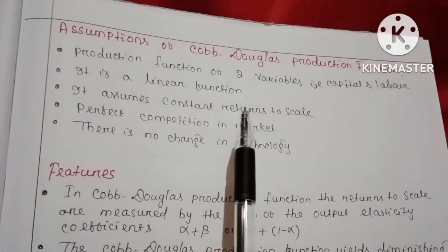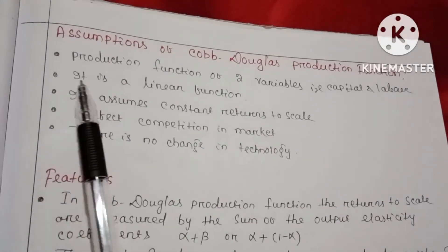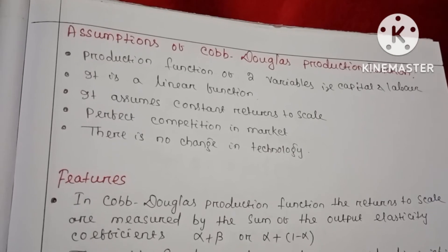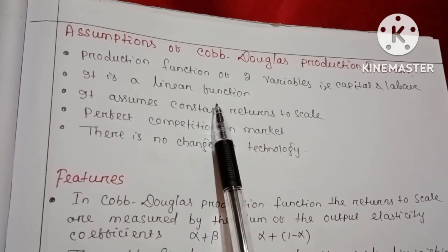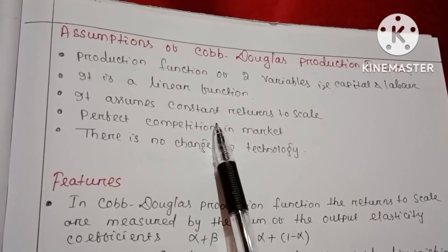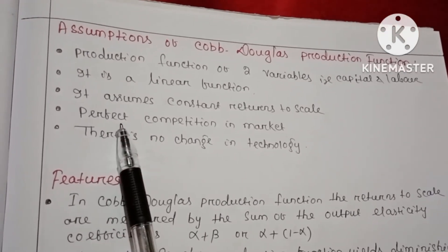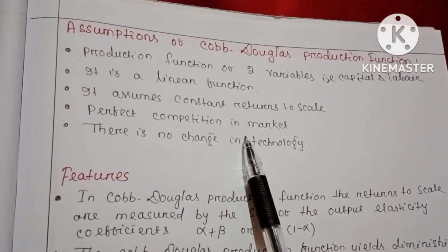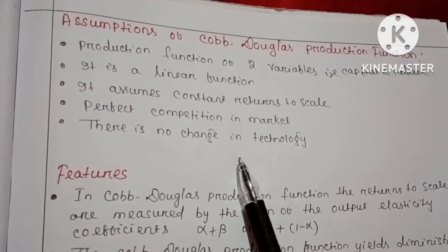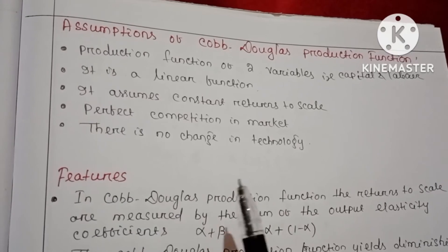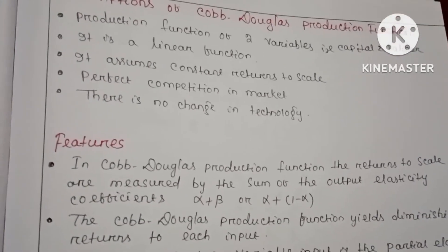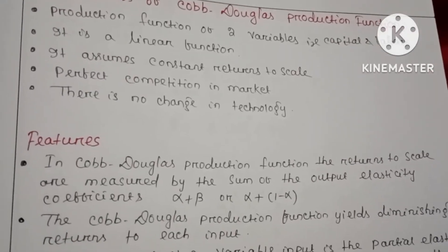The assumptions of the Cobb-Douglas production function are: (1) it is a production function of two variables — labor and capital; (2) it is a linear homogeneous function; (3) it assumes constant returns to scale; (4) there is perfect competition in the market; and (5) there is no change in technology during the production process.